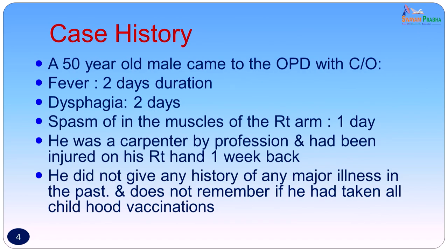A 50-year-old male came to the outpatient department with complaints of fever of 2 days duration, dysphagia of 2 days duration, and spasm in the muscles of the right arm of 1 day duration. He was a carpenter by profession and had been injured on his right hand 1 week back. He gave no history of any major illness in the past and did not remember if he had taken all his childhood vaccinations.